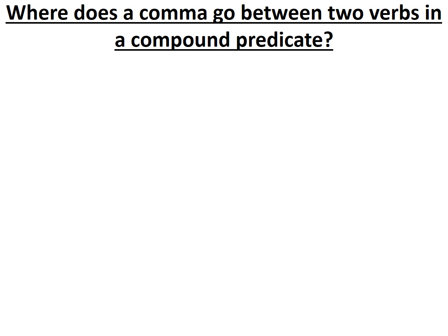Hello and welcome to Miss Hannah Loves Grammar. In this video we'll be answering the question: where does a comma go between two verbs in a compound predicate? Let's not get confused. A compound predicate is when the subject of the sentence is doing more than one thing — that's why we have two or more verbs in that sentence.